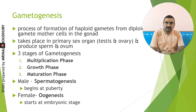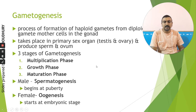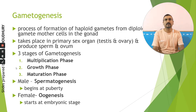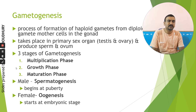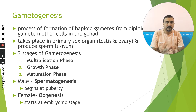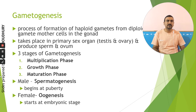Any gametogenesis has basically three steps: the multiplication phase, the growth phase, and the maturation phase. The multiplication phase is where the gamete mother cells multiply many times to increase their numbers for more gamete formation. The growth phase is where there is an increase in cytoplasmic content, either for nutrient requirements or for future development of the zygote. The maturation phase is the main phase during which meiosis takes place, so the diploid cell gives rise to haploid cells.